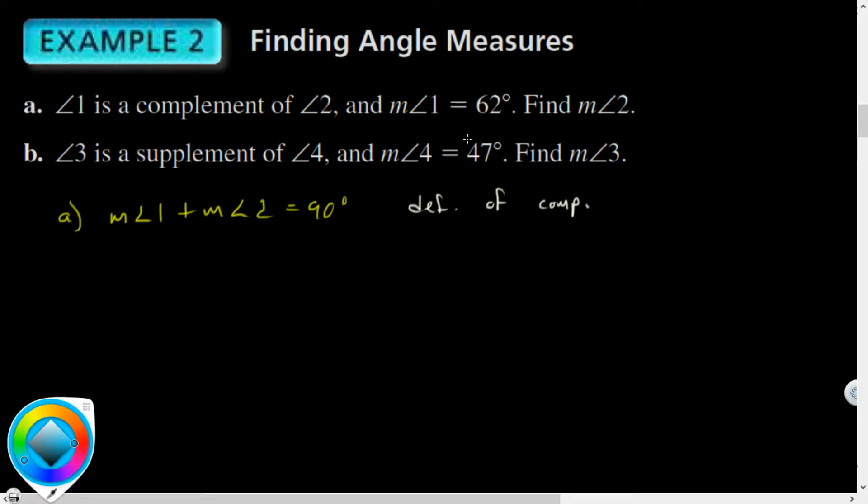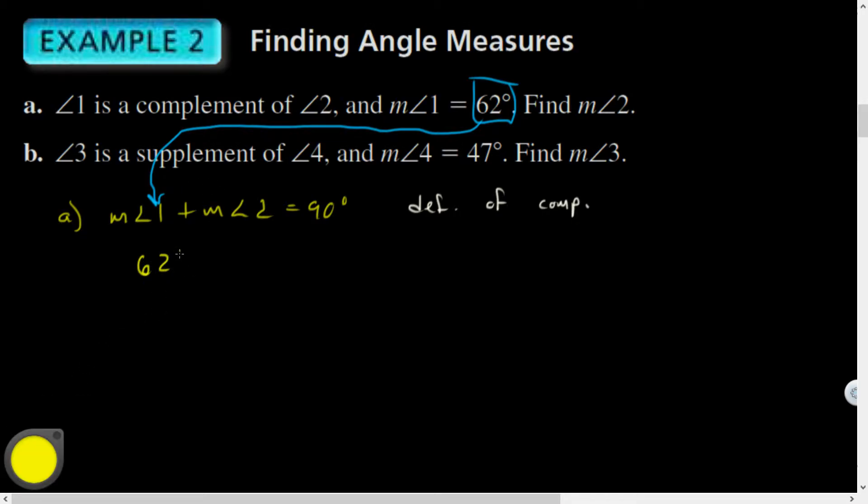And I'd have 62 degrees plus measure angle 2 is equal to 90. And then you guys can guess that using subtraction property, I could solve for the measure of angle 2 being, what's that, 28 degrees? Seems like it.